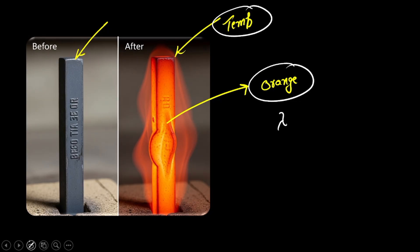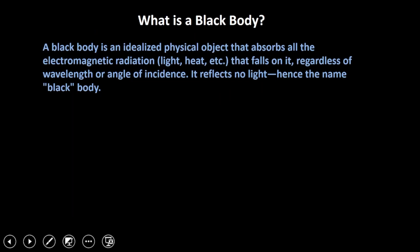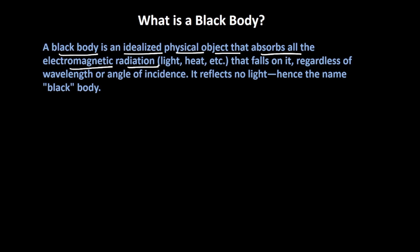Before we understand Wien's Law in detail, let's first understand what is a black body. A black body is an idealized physical object that absorbs all the electromagnetic radiation — like light, heat, etc. — that falls on it, regardless of wavelength or the angle of incidence. It reflects no light, hence the name black body.